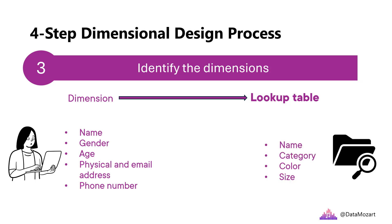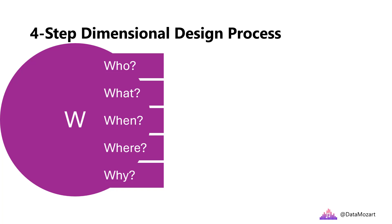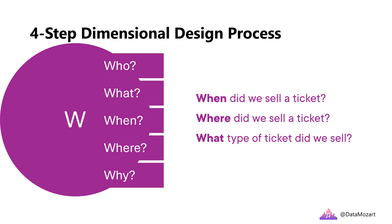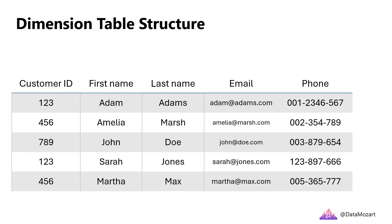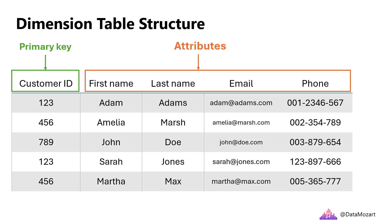Or think of a product — it probably has a name, belongs to a specific category, and has a specific color or size. Dimension tables usually answer questions starting with W: who, what, when, where, why. Back to our example: when did we sell a ticket, where did we sell the ticket, what type of ticket did we sell, and so on. This is a typical structure of a dimension table. It consists of a primary key that uniquely identifies each record, and one or more — usually many more — attributes that describe each instance of the business object or process. In this example, we have attributes such as first name, last name, email, and phone number that describe customers.